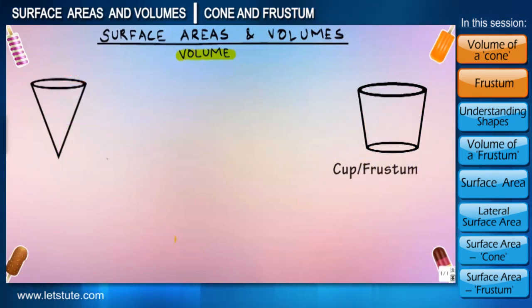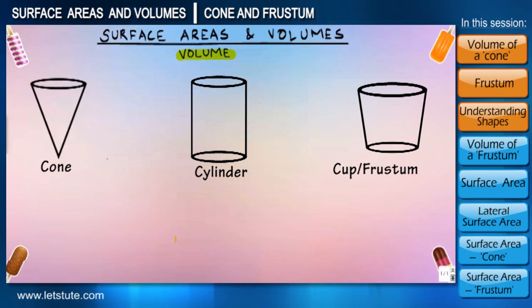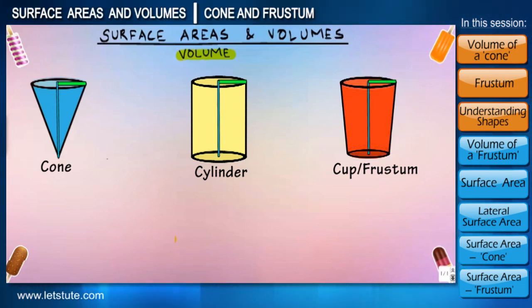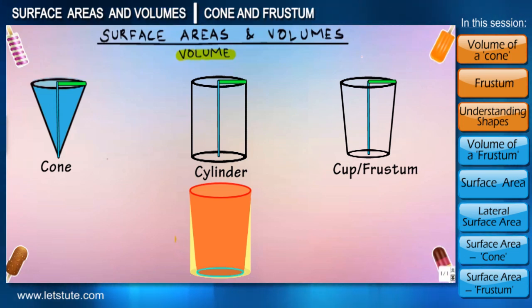Before we proceed to find the volume of the cup, let us first understand this shape of the cup in contrast to the cylinder and the cone. So let us consider a cone, a cylinder, and a frustum and keep their parameters same just like we did before. We will keep their radius and their height similar. Now in such a condition, if we try to fit a frustum into the cylinder, the upper circular surface of both of these shapes will be same, but there will be a difference when it comes to the lower circular base, because the lower circular base of the frustum is little smaller than that of the cylinder when they have the same parameters.